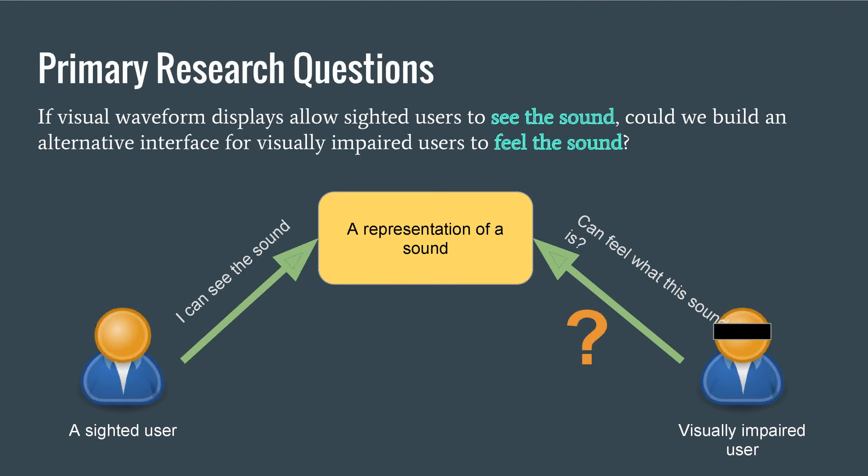So now the question is, is cross-modal mapping for visual waveforms possible? Or, if the visual waveform displays allow sighted users to see the sound, can we build an alternative interface for visually impaired users to feel the sound?